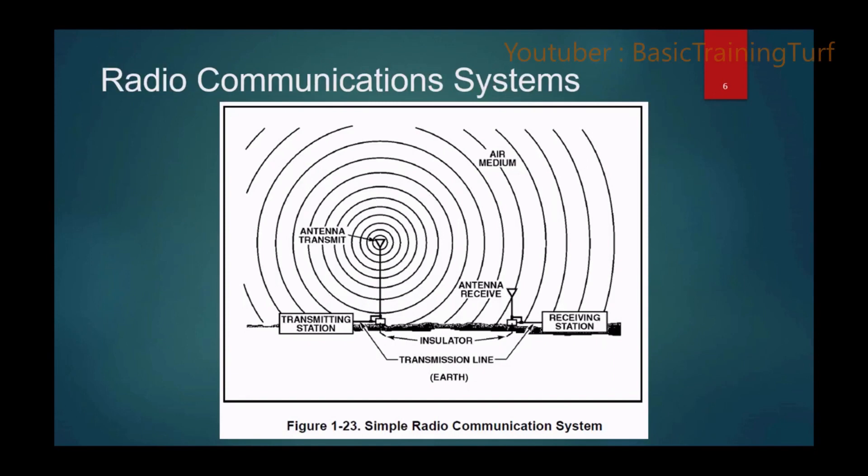Let's start off with radio communication systems. Pretty intuitive - you have a transmitting station whose energy is transmitted through a transmission line to an antenna which then radiates the radio frequency energy through some medium and then received by a receive antenna that couples that energy through the antenna into the transmission line and into your receiving station.